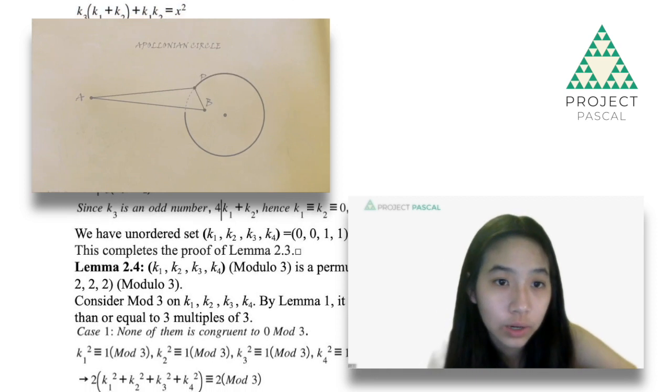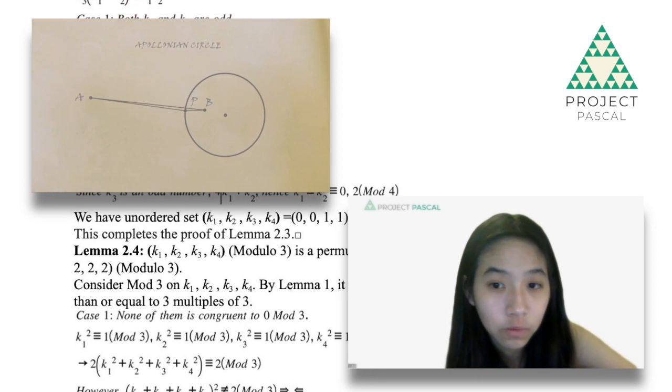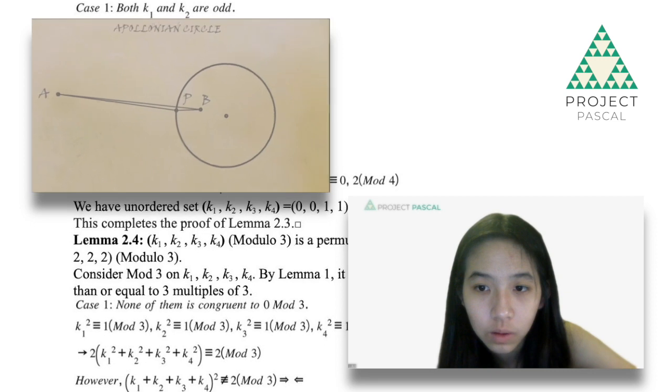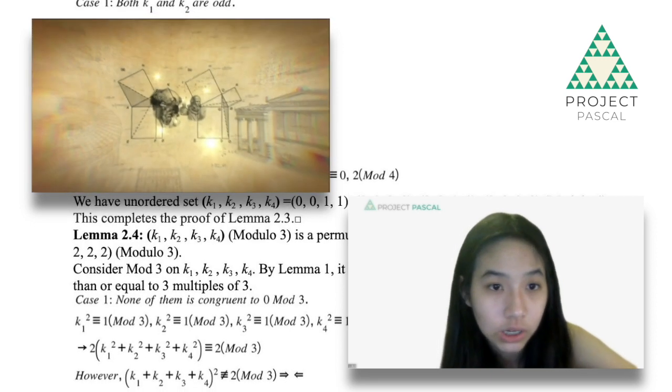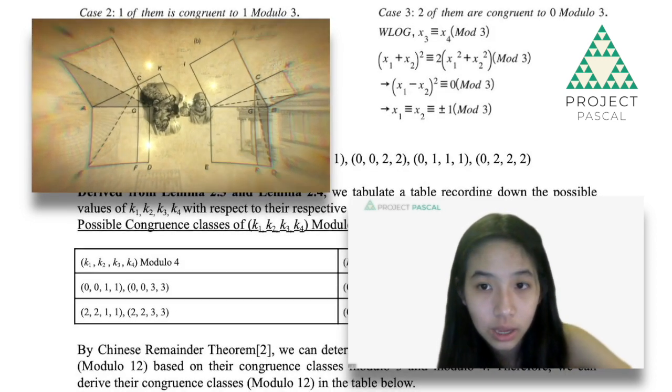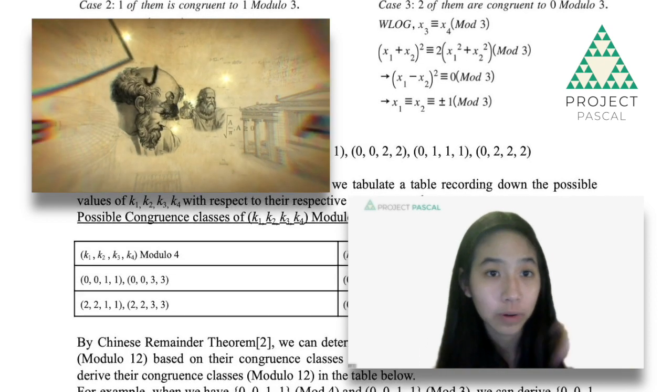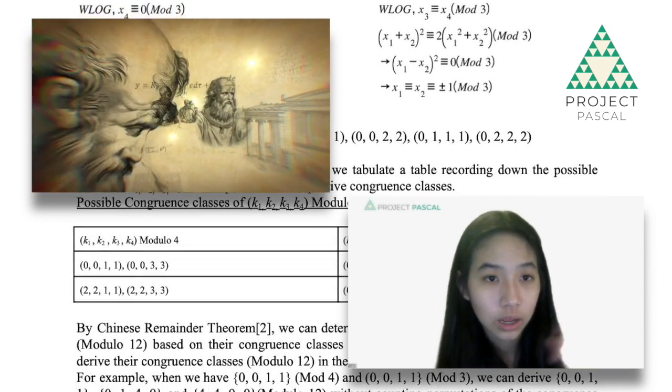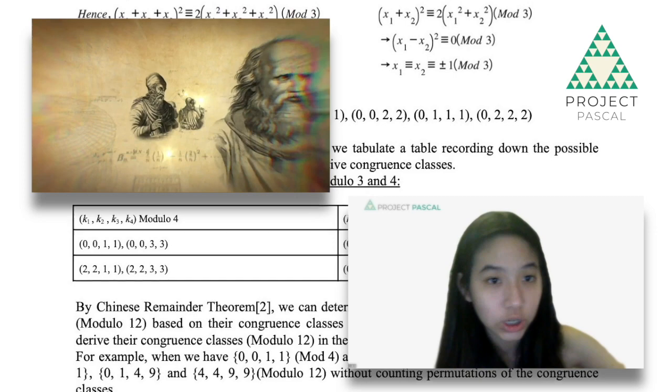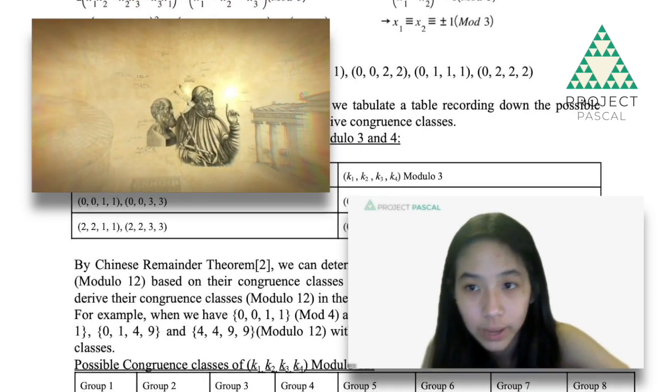And by the end of it, I tried to come up with kind of a fixed pattern for it. For instance, how if the curvature satisfies a certain parameter, you can apply the operation to it to make sure that the state where you transition it to is also a solution to Apollonian circle packing.